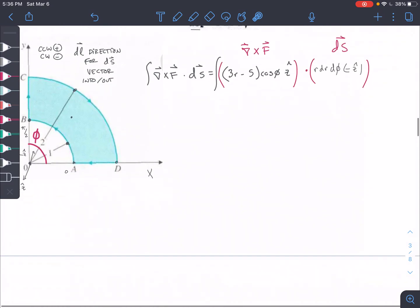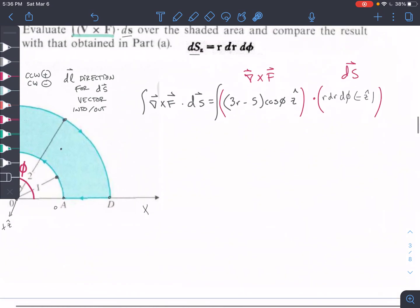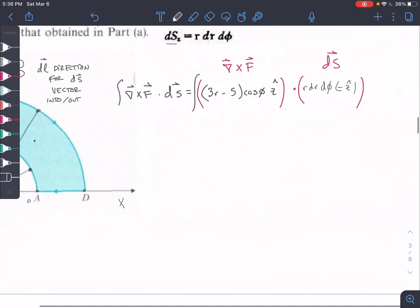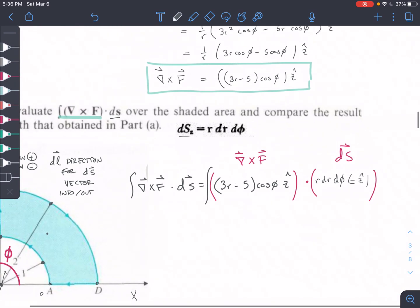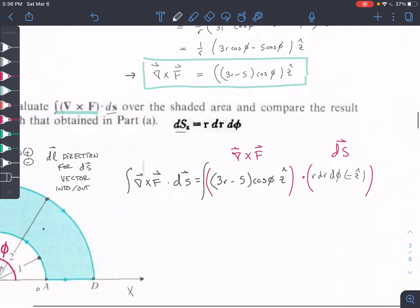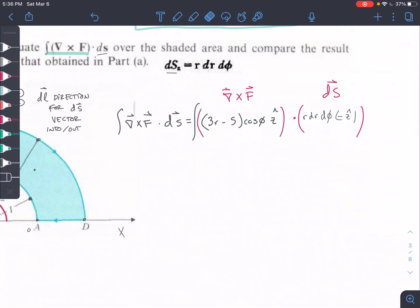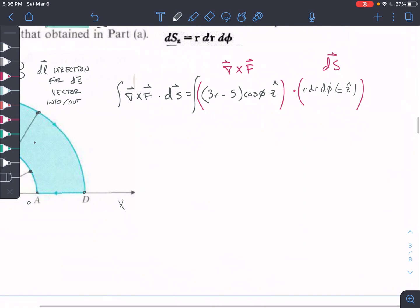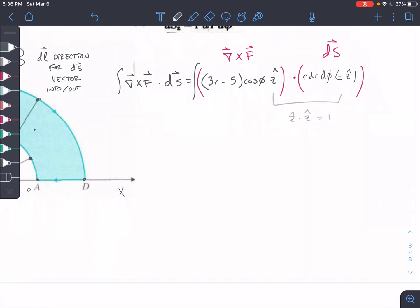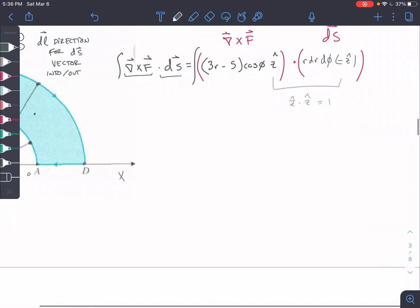Okay, so let's go ahead and get started here on the problem. All right, so we have our curl from part B, and we just plug it in here, and then we have our ds that we just explained. So, first off, z-hat dot z-hat equals one, so our vector component is going to drop out. The result of this dot product is going to be a scalar. So we won't have vector direction when we're done.